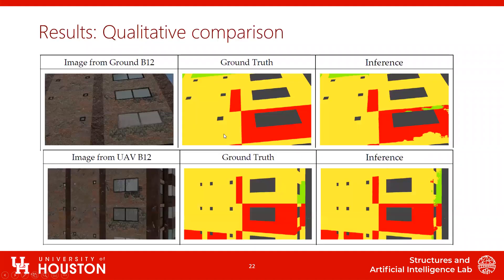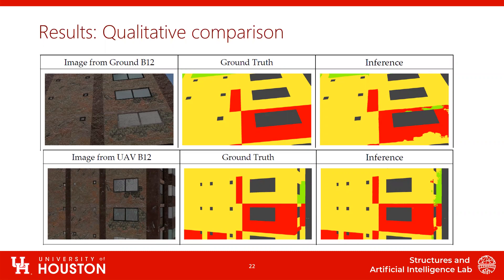Here are some examples to illustrate. We're predicting the damage state — on the left is an image acquired from the ground, and below that an image acquired from a UAV. The ground-truth damage states are in the second column. The performance of the network on ground images from B12 is nearly as good as on UAV images. There are still some issues, but the purpose of this study was to determine whether a pre-trained network would work well in a given scenario, and how much additional data might be needed for it to work well for a particular building from a particular data acquisition path.